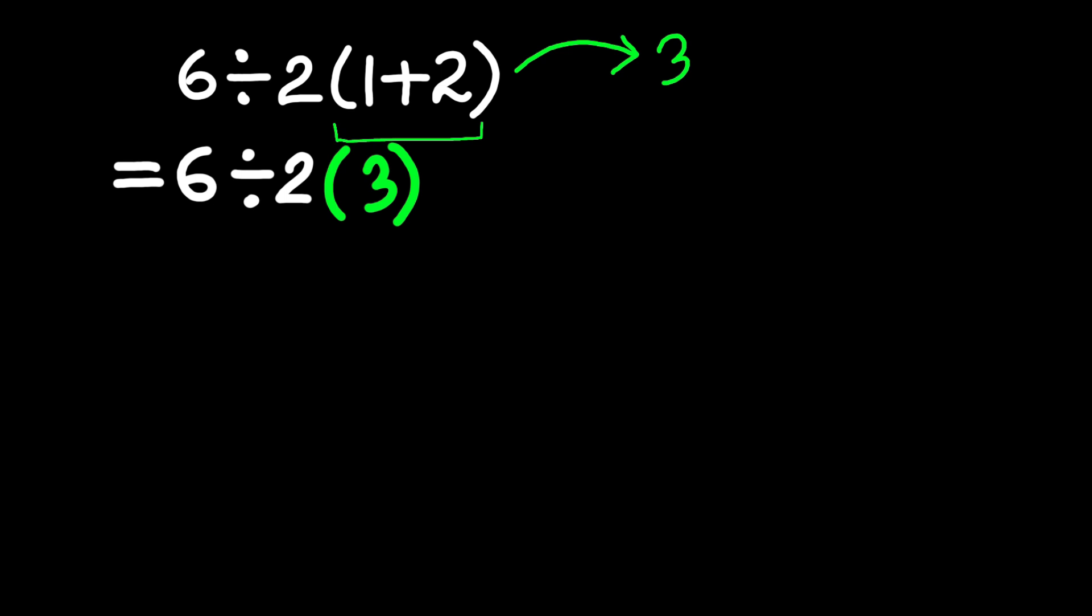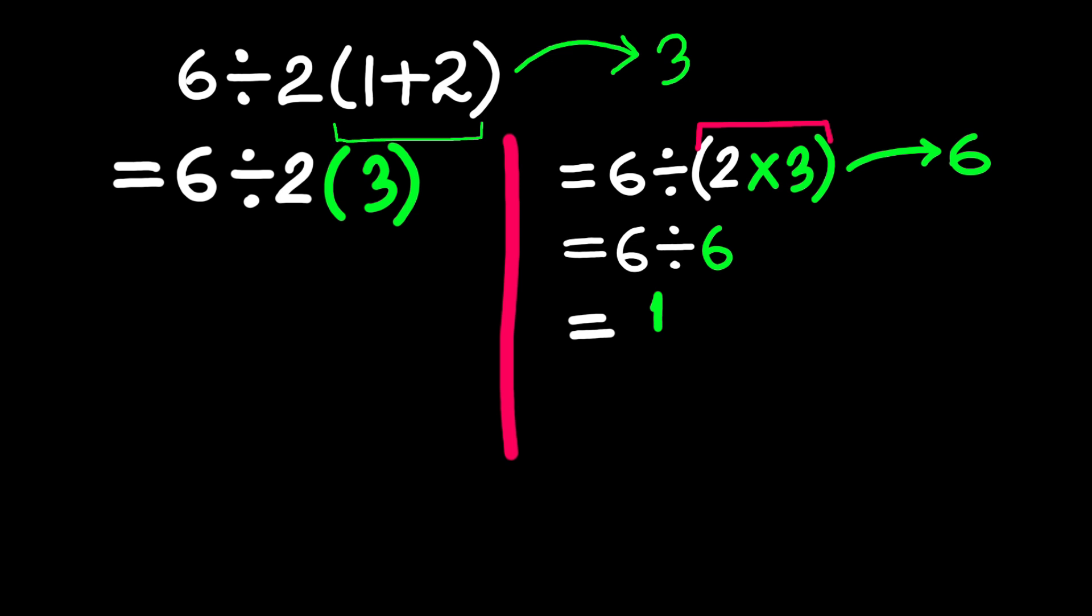Some people think this means 6 divided by (2 times 3), and they go ahead and do 2 times 3, which equals 6, and then 6 divided by 6 gives us 1.